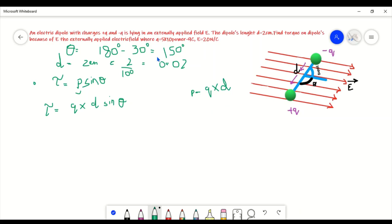Now the distance was two centimeters, so two centimeter distance is 0.02 meters.